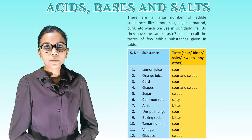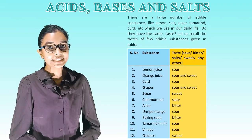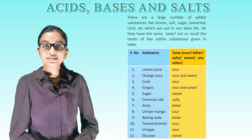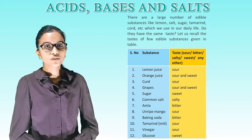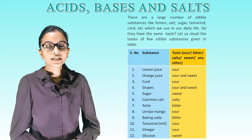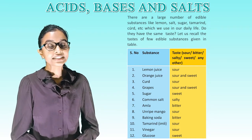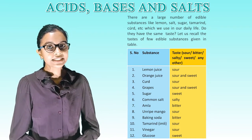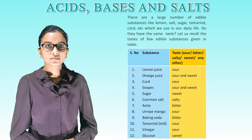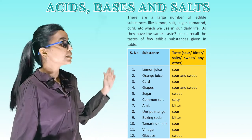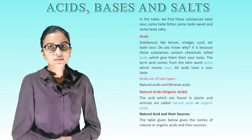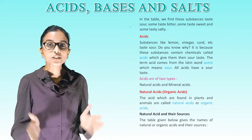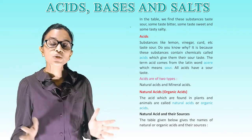Number 7 is amla — bitter. Number 8 is unripe mango — sour. Number 9 is baking soda — bitter. Number 10 is tamarind (imli) — sour. Number 11 is lemon vinegar — sour. Number 12 is glucose — sweet. In the table we find some substances taste sour, some taste bitter, some taste sweet and some taste salty.